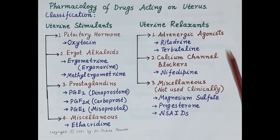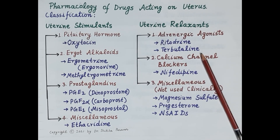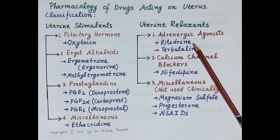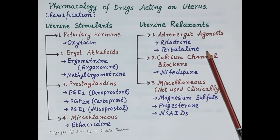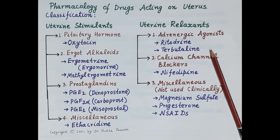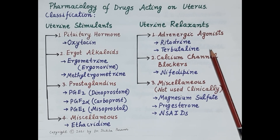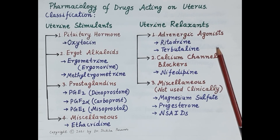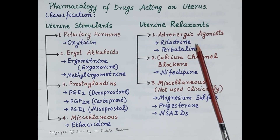The first category of tocolytics are adrenergic agonists, for example ritodrine and terbutaline. Ritodrine is a beta-2 selective agonist that shows a more prominent uterine relaxant effect. These drugs are associated with complications in the mother, fetus, and neonates, and should be used cautiously under physician supervision. Use of ritodrine to postpone childbirth has been found to increase maternal morbidity.